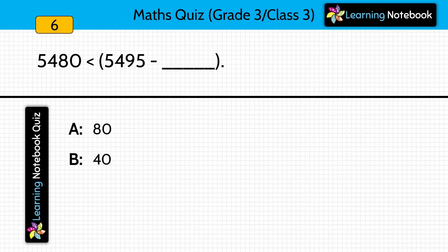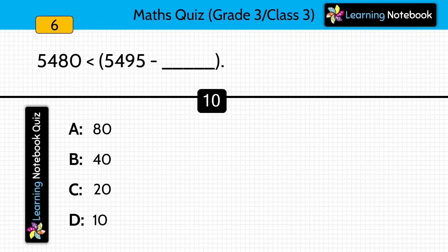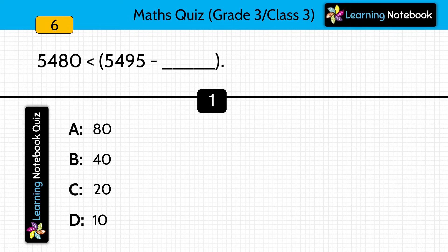Question six: 5,480 is less than 5,495 minus blank. What should be subtracted so that the equation remains correct? Answer is 10 — 5,495 minus 10 equals 5,485, which is greater than 5,480.